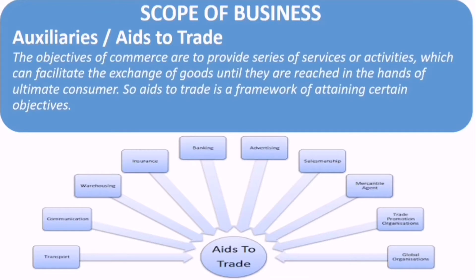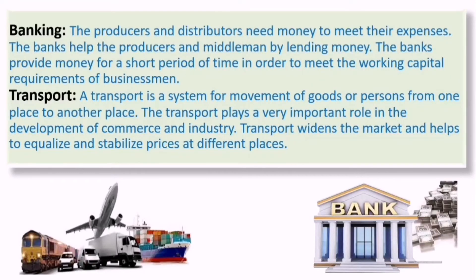The objectives of commerce are to provide a series of services or activities which can facilitate the exchange of goods until they reach the hands of the ultimate consumer. The main purpose of commerce is to break the barriers between producer and consumer. So aids to trade is a framework for attaining the objective of carrying goods from the place of creation to the ultimate users.